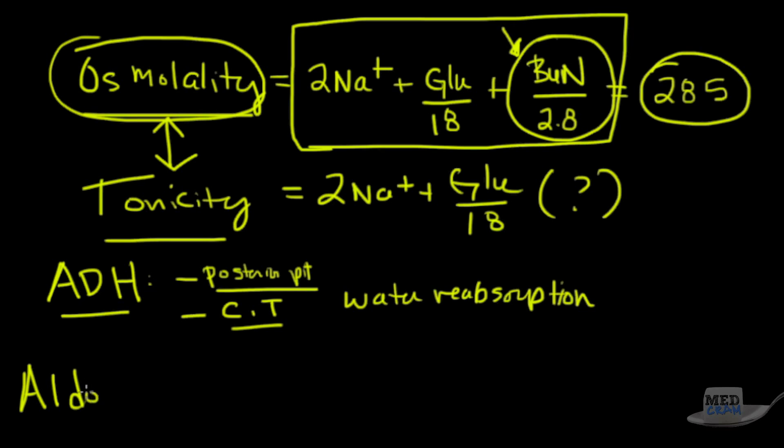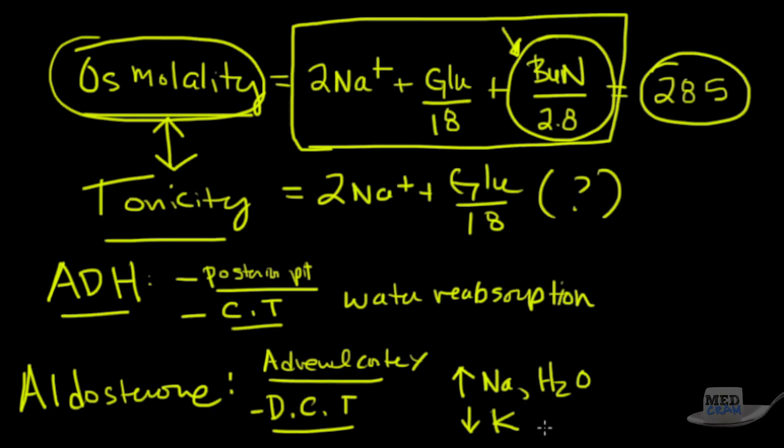The other hormone is aldosterone. Aldosterone is a steroid hormone secreted from the zona glomerulosa of the adrenal cortex. It works primarily at the distal convoluted tubule of the nephron. Its action is to cause reabsorption of sodium and, because of that, water. And it causes excretion of potassium and protons. Just be aware of those things, because water and sodium are going to be intimately related to the discussion we're going to have today.